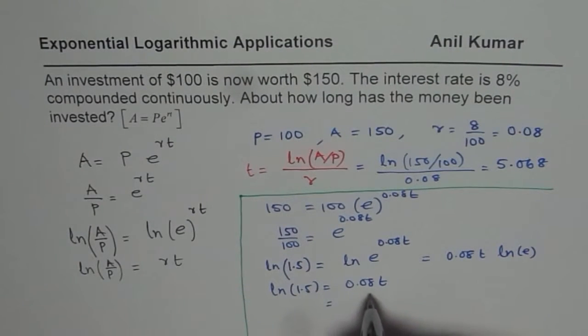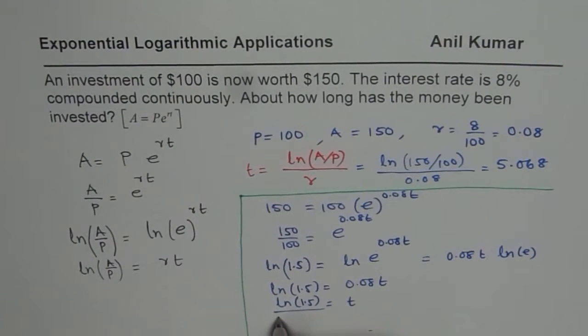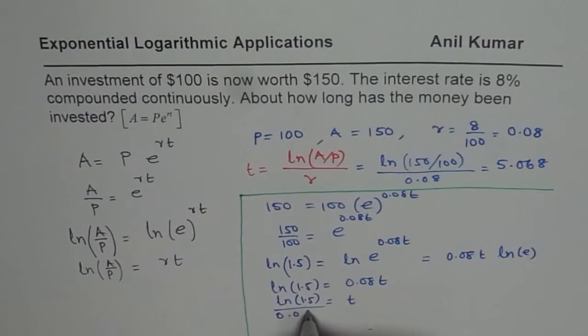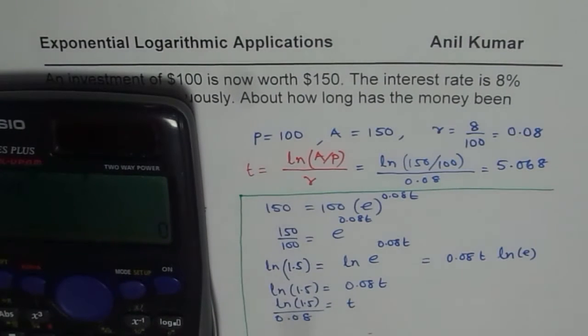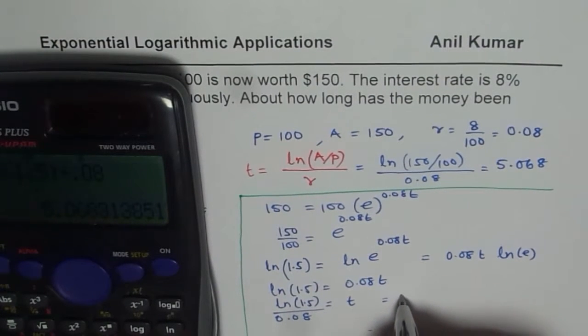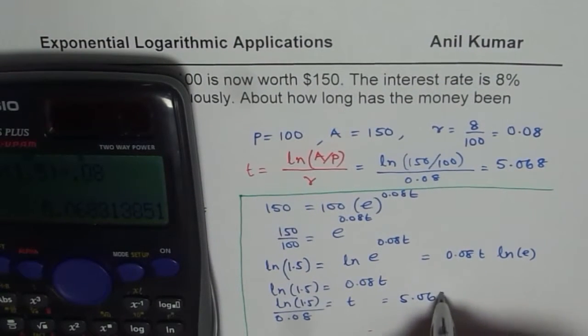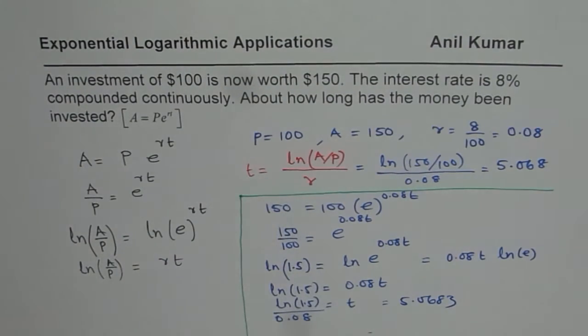Now from here, you know what T is. So T is ln 1.5 divided by 0.08. So we can again use the calculator. We say ln 1.5 divided by 0.08 equals exactly the same thing, 5.0683. So that is a way to solve exponential equations using logarithms.